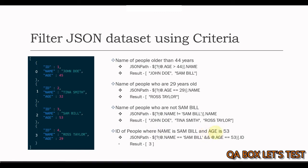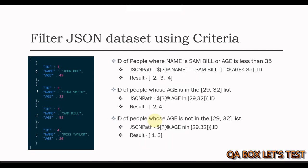Then: ID of people where name is Sam Bell AND age is 53. We use the logical AND operator — both conditions must be true — so we say @.name == 'Sam Bell' && @.age == 53. It returns that particular record, and then .id gives us 3. Next: ID of people where name is Sam Bell OR age is less than 35. The OR condition picks Sam Bell's record plus records with age less than 35, giving IDs 2, 3, and 4. Finally: ID of people whose age is IN the list [29, 32] — @.age in [29, 32]. And NOT IN — @.age nin [29, 32] — gives the opposite result.